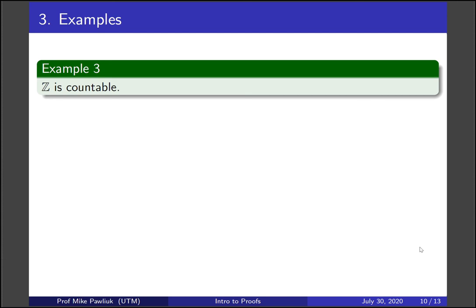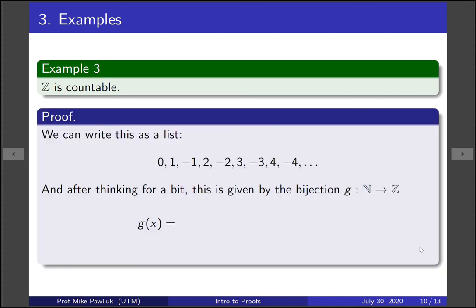Now a more interesting example. The integers is a countable set. So one way to write it out as a list would be 0, 1, minus 1, 2, minus 2, 3, minus 3, 4, minus 4, etc. And keep alternating. So this would be an example of an enumeration of the integers, where everything is represented eventually, and there are no repeats.